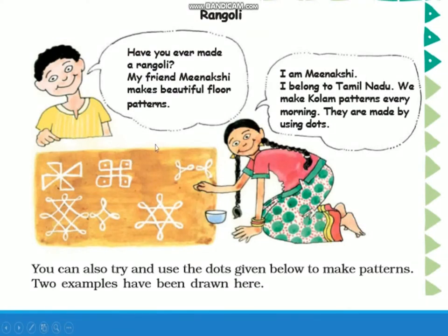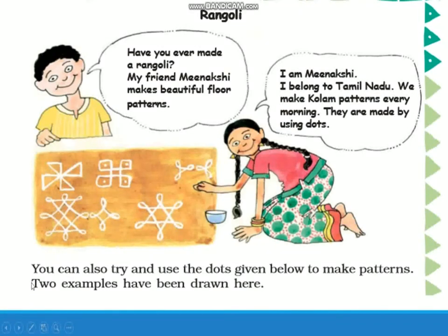Here Meenakshi is giving an introduction — she belongs to Tamil Nadu and makes a column pattern using dot grids. Dot grids means a grid of dots. I will show you afterwards what dot grids mean. Two examples have been drawn here and you can also try using the dots given below to make patterns.